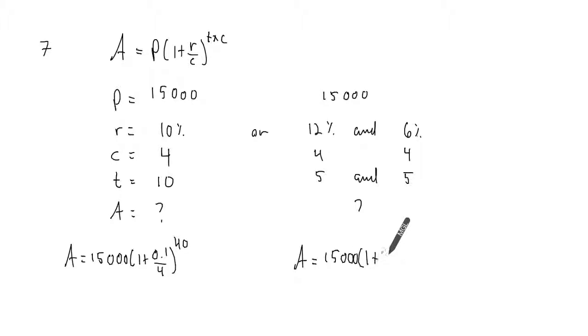Times 1 plus 0.10 over 4, now the value here will be quarterly, and it's 5 years compounded quarterly, so 20.